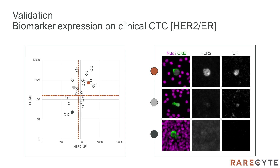Here we show detection of HER2 and ER on CTCs from breast cancer patient samples using our breast CTC assay. The plot shows HER2 versus ER MFI for individual clinical CTCs with representative images shown at right for color-coded points on the graph. From top to bottom: a double positive cell corresponding to the orange dot in the upper right quadrant, a HER2 negative but ER positive cell corresponding to the gray dot in the upper left quadrant, and a double negative cell corresponding to the dark dot in the lower left quadrant of the plot. The overall distribution reveals the heterogeneity in expression of these biomarkers across multiple CTCs in the clinical setting.